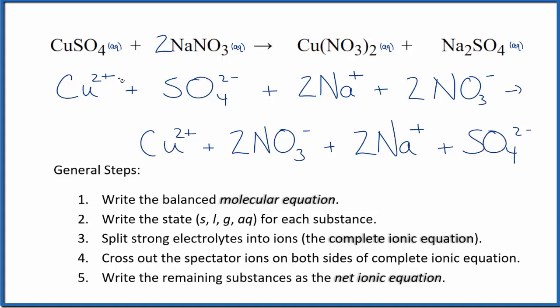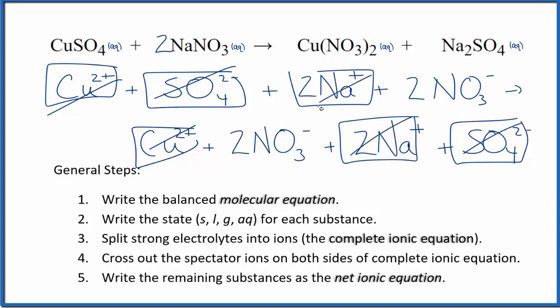So if we crossed out spectator ions, ions that were the same on both sides, copper 2 ion, that's a spectator ion. The sulfate ion, that's a spectator ion. We have two sodium ions, two sodium ions in the products. And finally, two nitrate ions. And again in the products, two nitrate ions.